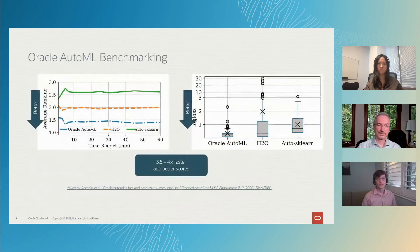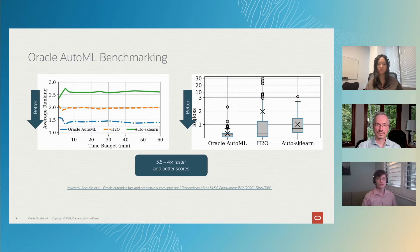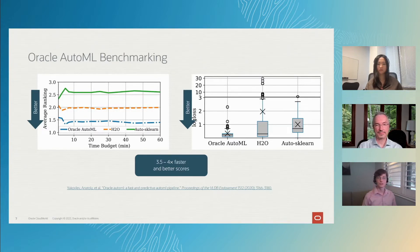We did a comparison against two other state-of-the-art AutoML solutions, H2O and Auto-Scikit-Learn. On the left, we're showing the accuracy ranking of all the different methods across different time budgets. Smaller is better, so you can see that between 10 minutes and 60 minutes, we're finding better solutions on average across a bunch of different datasets.